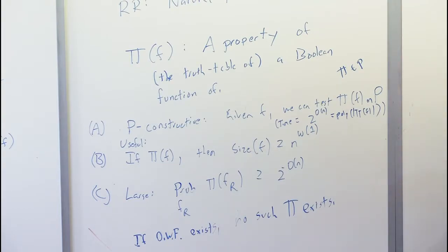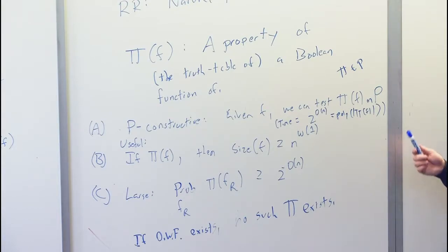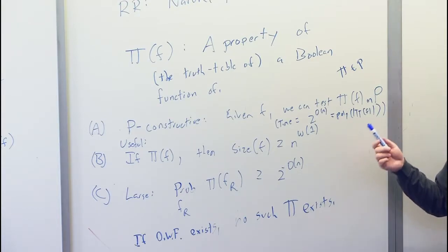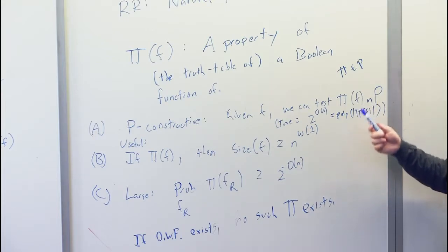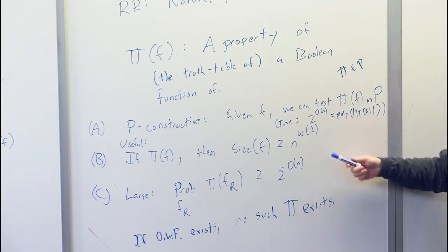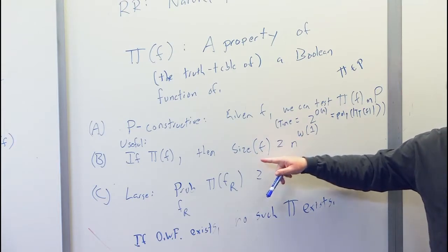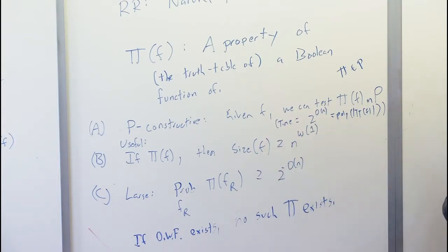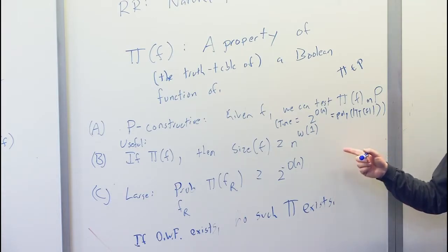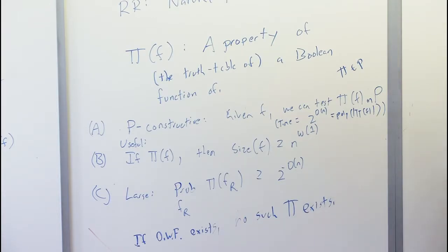It's still a very interesting notion, because you can play with the knobs and say this may be true for general circuits, but for the kinds of circuits that we have lower bounds for, there are such properties, and they're implicit in the proofs of lower bounds.